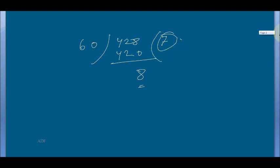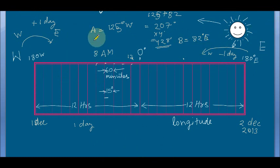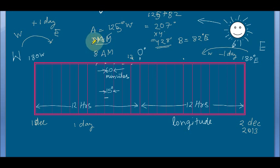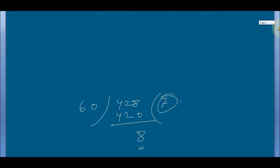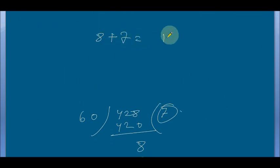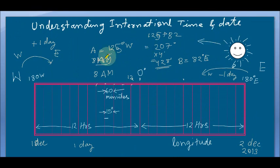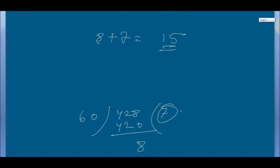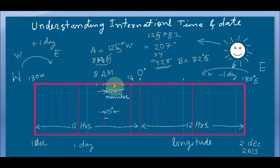So there is a difference of approximately 7 hours. Now, the time at point A is given as 8 AM. To find the time at point B, you add 7 to this. 8 plus 7 equals 15, meaning 15 hours.